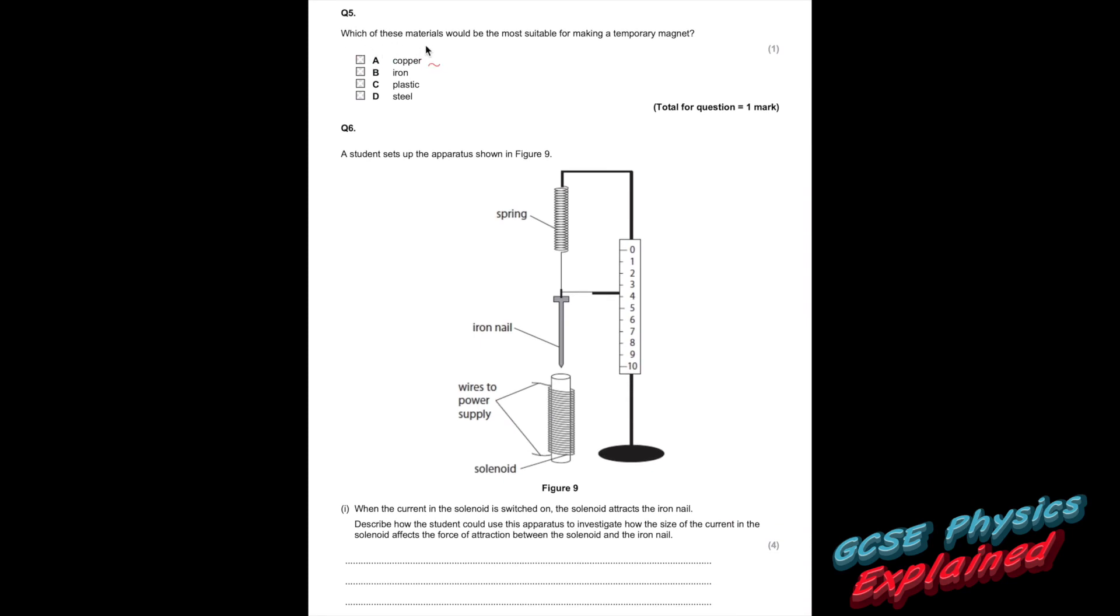Question 5. Which of these materials would be the most suitable for making a temporary magnet? Copper? Well, that's not even magnetic. Iron? Yes. Plastic? That's not even magnetic. Steel? Yes, it is magnetic, but that'll be a permanent magnet. So the answer is iron.